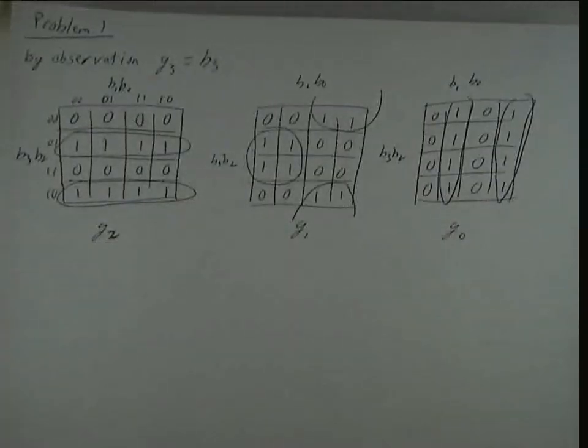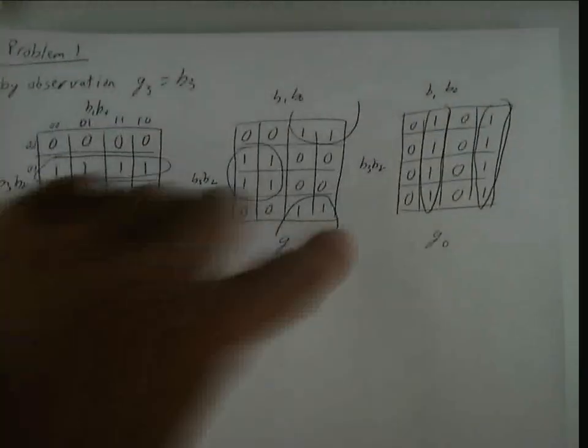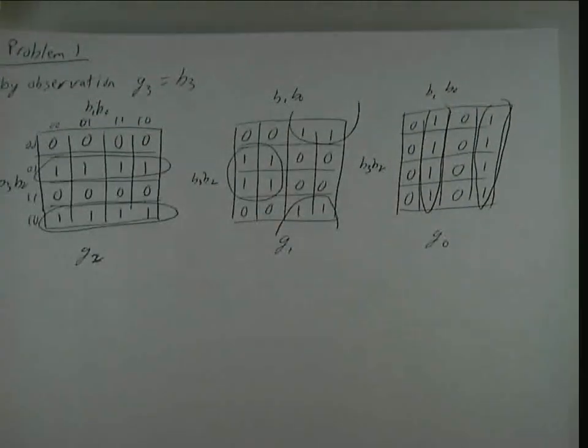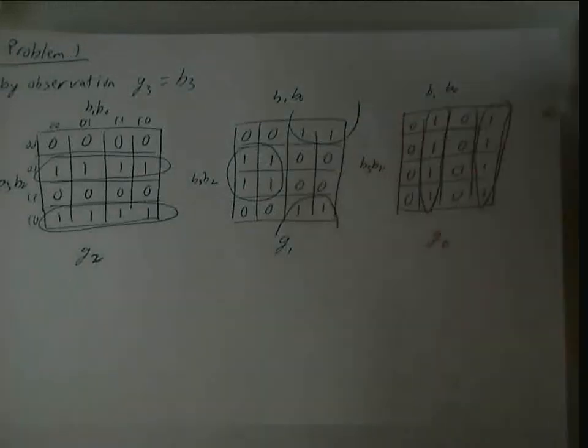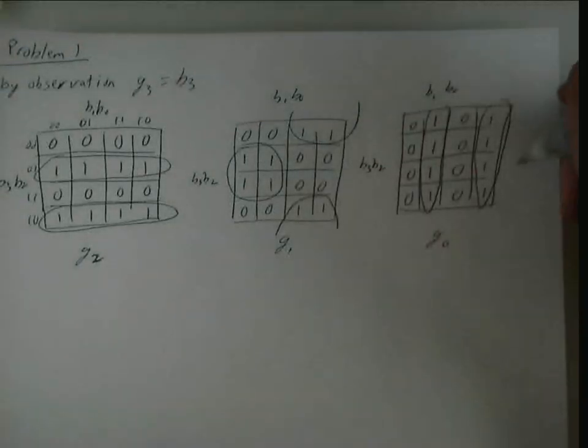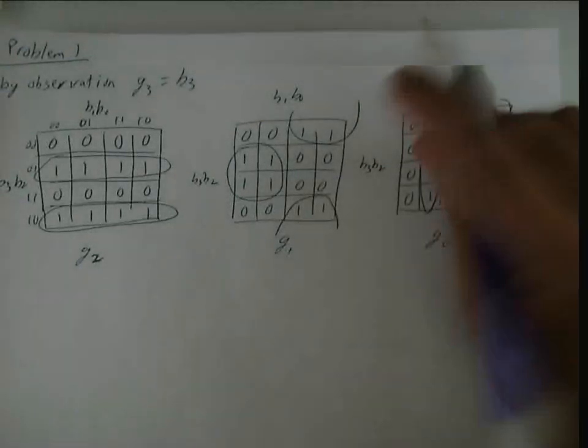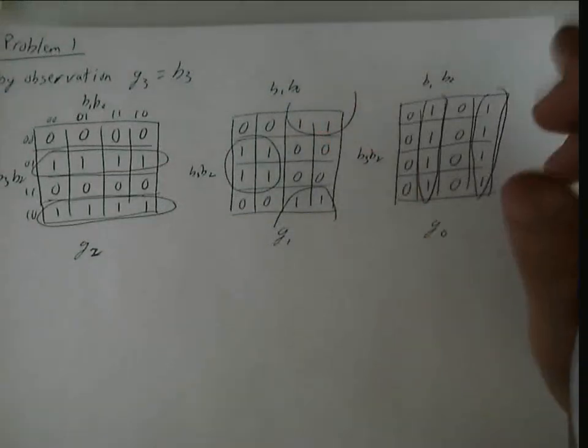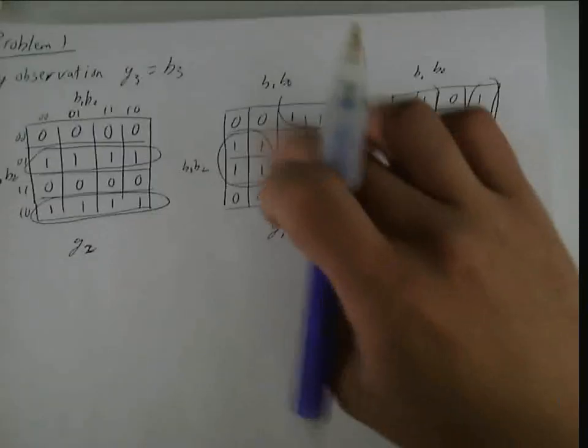So the first thing I notice is basically everything is in a group of four. And also that my K-maps, my prime implicants don't share any adjacent cells. And they actually kind of have these every other pattern.